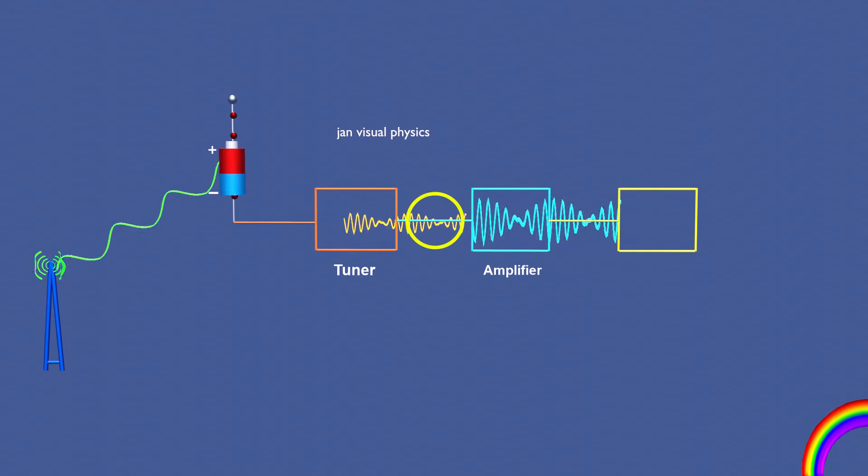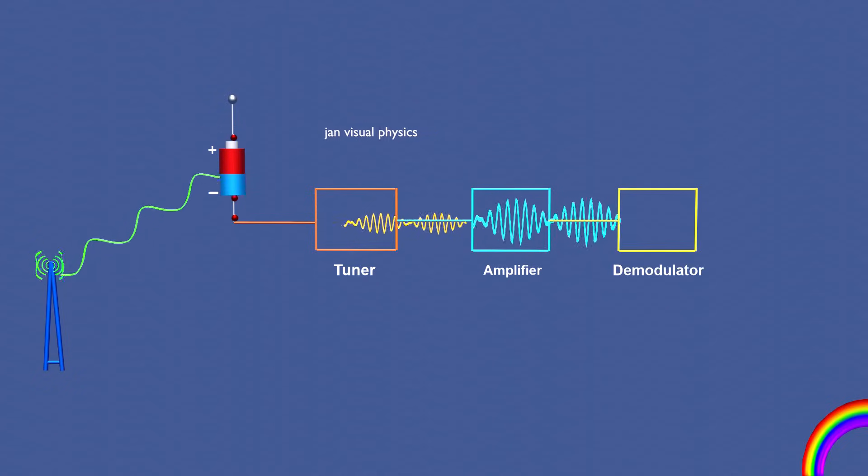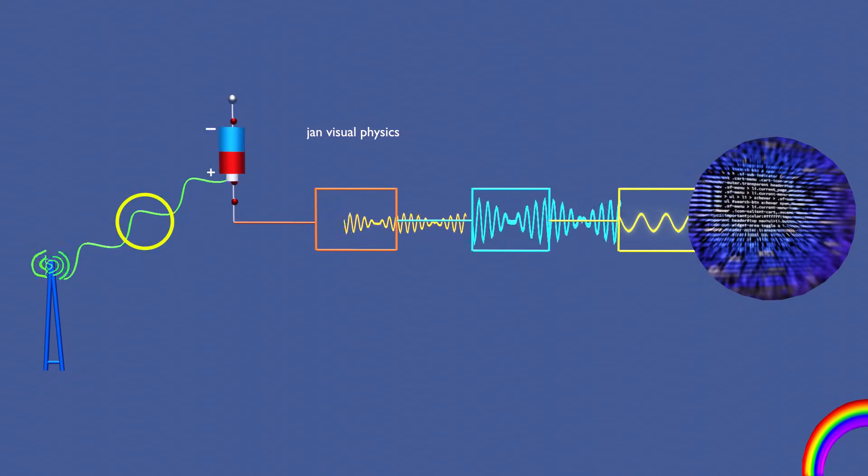The selected weak signal is amplified, and then a demodulator separates the original audio, video, or digital data information from the carrier wave.